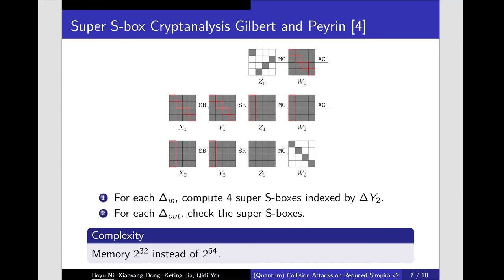We divide the search process into four parts that can all be computed independently. Each part contains four bytes and we call the operation that changes values of those four bytes from the state X_1 to state Y_2 as a super S-box.